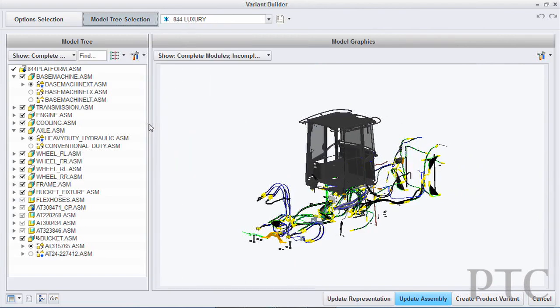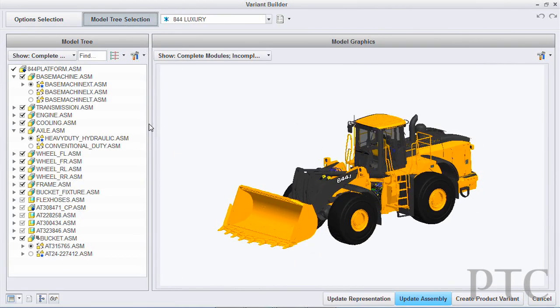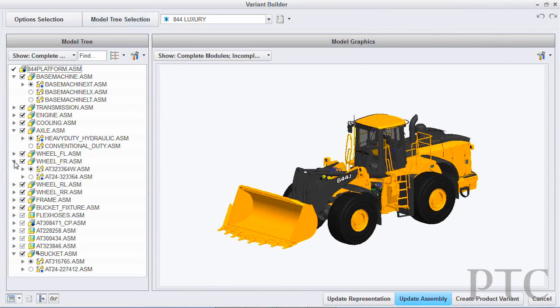They can look at the product architecture, they can look directly at the 3D models, and they can even view and interact with the bill of materials, turning things on and off to see different representations of the product.